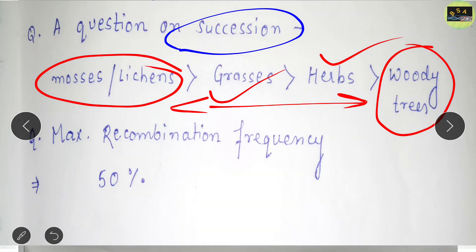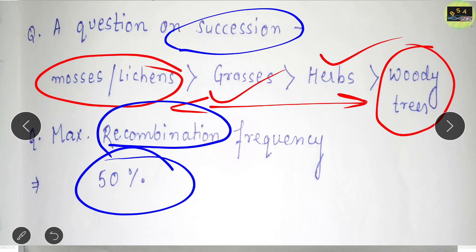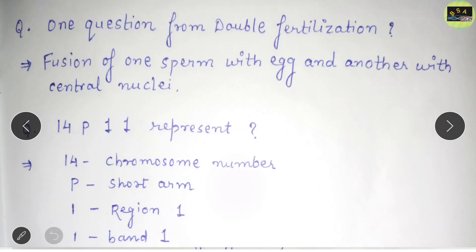Another simple question from the evening shift asks about the maximum recombination frequency. The maximum recombination frequency is 50 percent, so 50% is the correct answer.